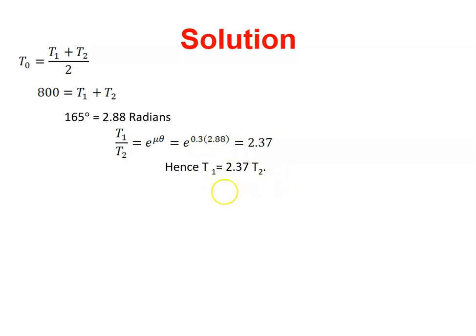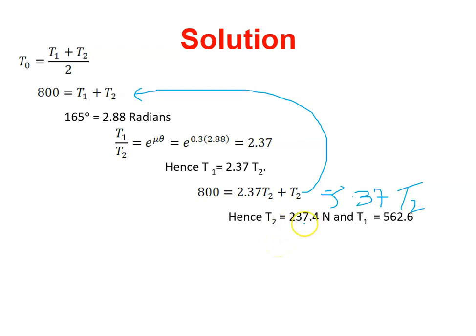Hence T₁ equals 2.37 times T₂. Back into this equation then, 800 equals T₁, but instead of T₁ I'm going to say 2.37 times T₂ plus T₂, which equals 3.37 T₂. Hence T₂ is 237.4 newtons and T₁ is 562.6 newtons. I got that by dividing 800 by 3.37.